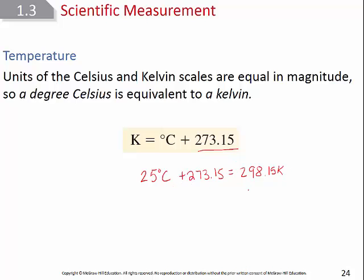Kelvin is the base SI unit for temperature. If you're first given Fahrenheit, you'll have to convert to Celsius first. If you're unfamiliar with converting between Celsius and Fahrenheit, your textbook does an excellent job of covering that, but we're going to move on to the more chemistry-specific conversions.